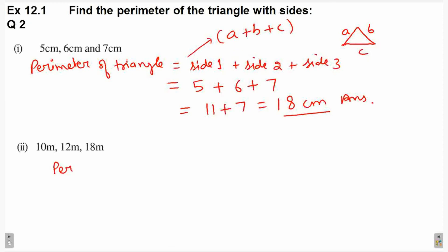Next part, perimeter of triangle is equal to 10 plus 12 plus 18. We've added all three sides' lengths. 10 plus 12 is 22, plus 18 is 30. This is equal to 10 plus 30, 40 meters. This is the answer.